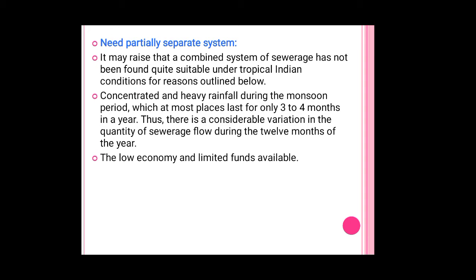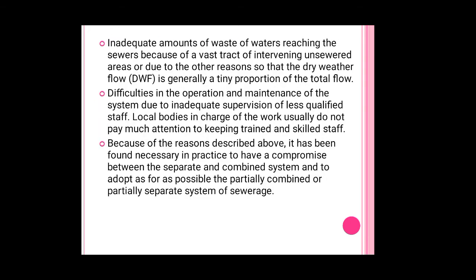There is considerable variation in the quantity of sewage flow during the 12 months of the year. Another reason is low economy and limited funds available. There is also inadequate amount of wastewater reaching the sewers because of vast tracks of intervening unsewered areas or other reasons, so that the dry weather flow is generally a tiny proportion of the total flow. Additionally, there are difficulties in operation and maintenance due to inadequate supervision by less qualified staff; local bodies in charge usually do not maintain trained and skilled staff.